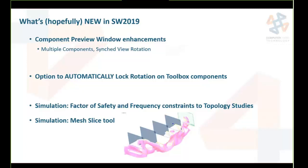Component preview window enhancements are coming. There will be an option to automatically lock rotation on toolbox components in system options. For simulation, topology studies will now have factor of safety and frequency constraints, and there's a new mesh slice tool for better mesh analysis. Those are the highlighted 2019 features shown on the main stage — of course there will be many, many other enhancements beyond these.